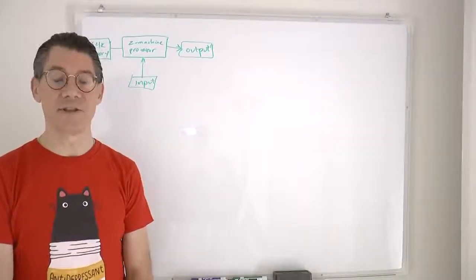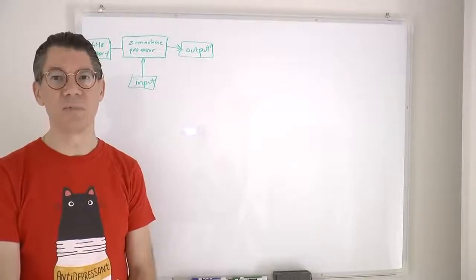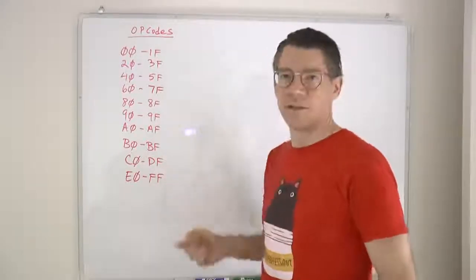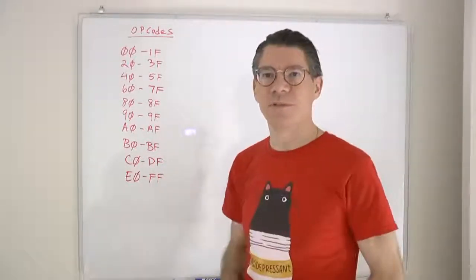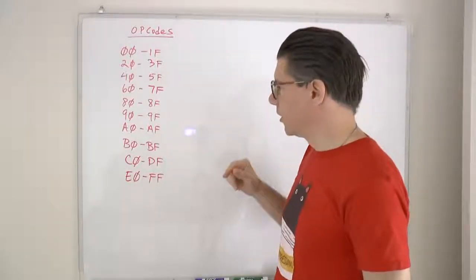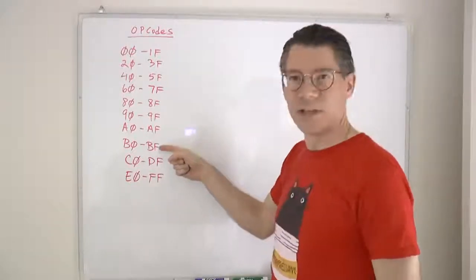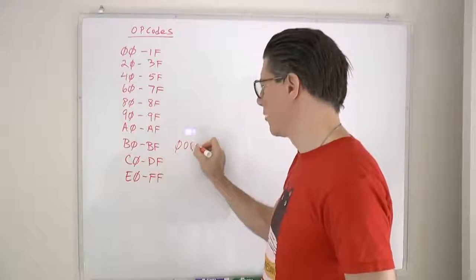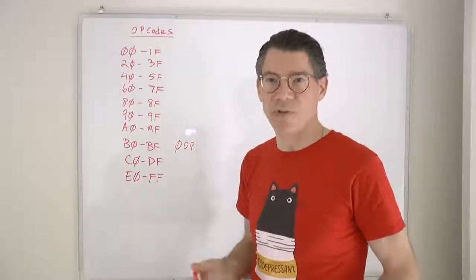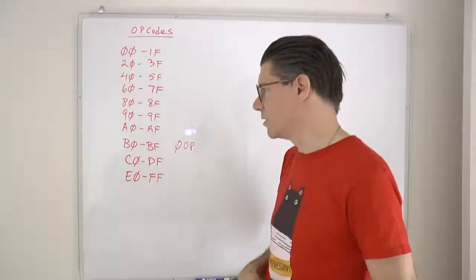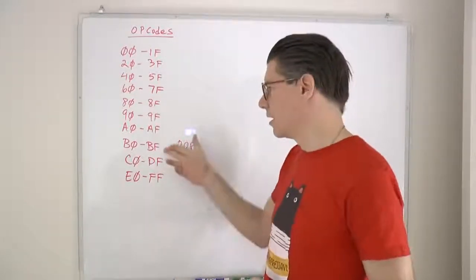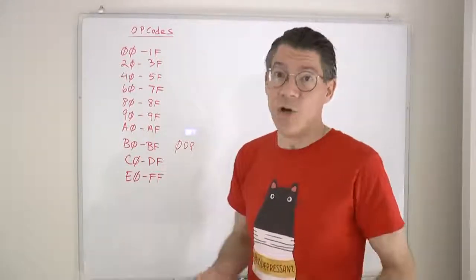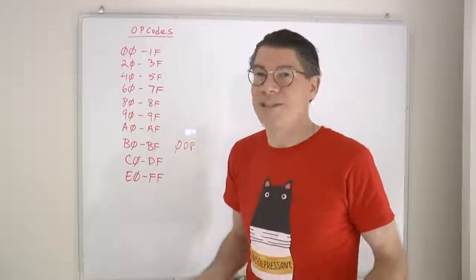Let's take a look at the instruction set we'll need to implement. The opcodes are 8-bit, so we have 0 to 255. The first section we'll look at is called the zero-operand opcodes because they take no operands, which means the operation is described by a single byte. For example, no-op — that doesn't take any operands and doesn't do anything either.